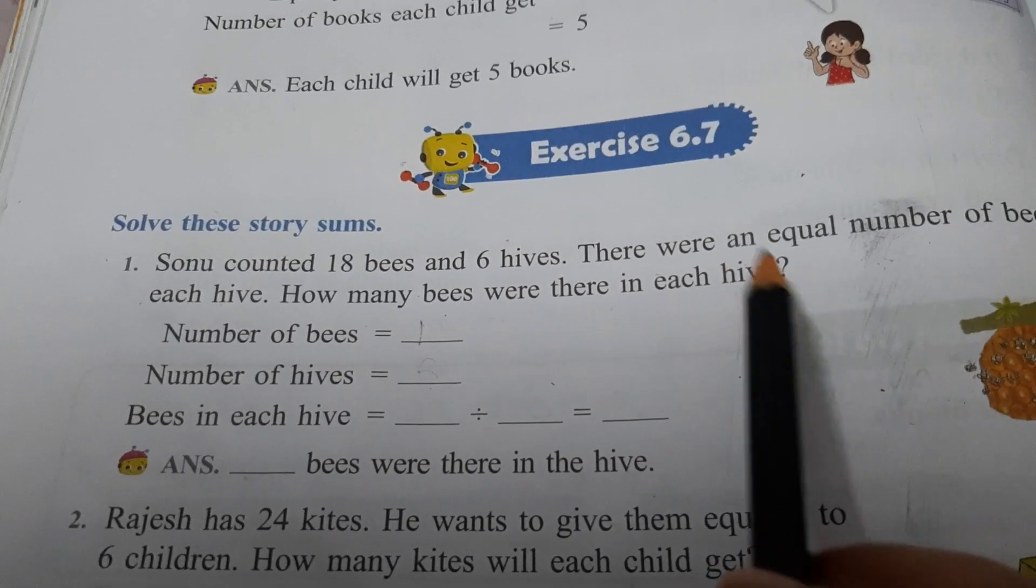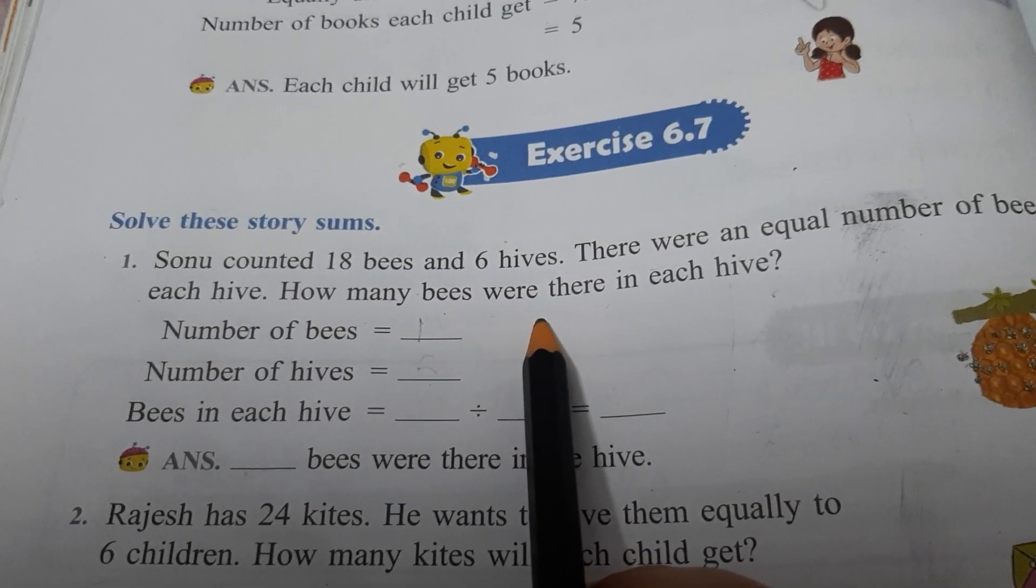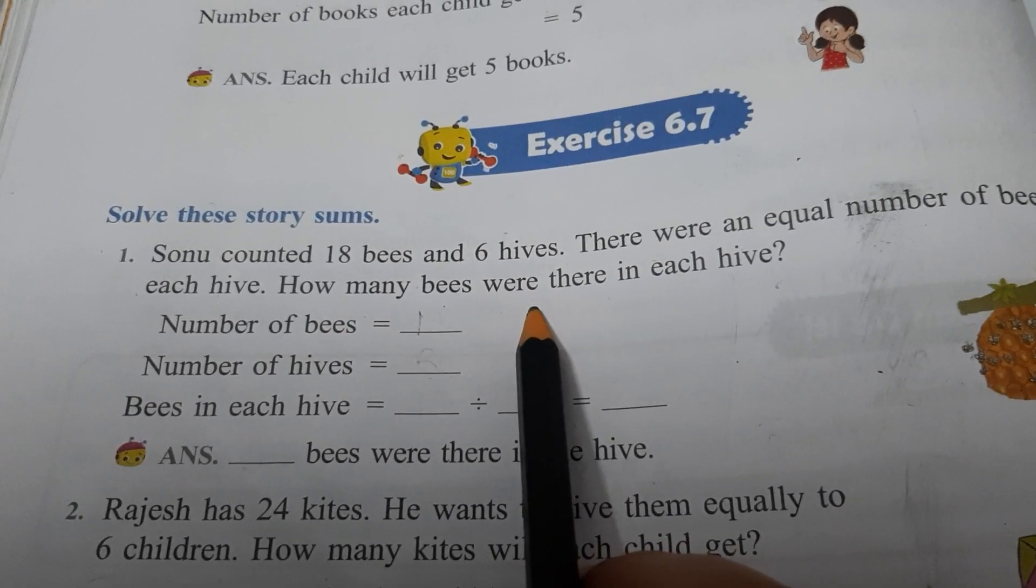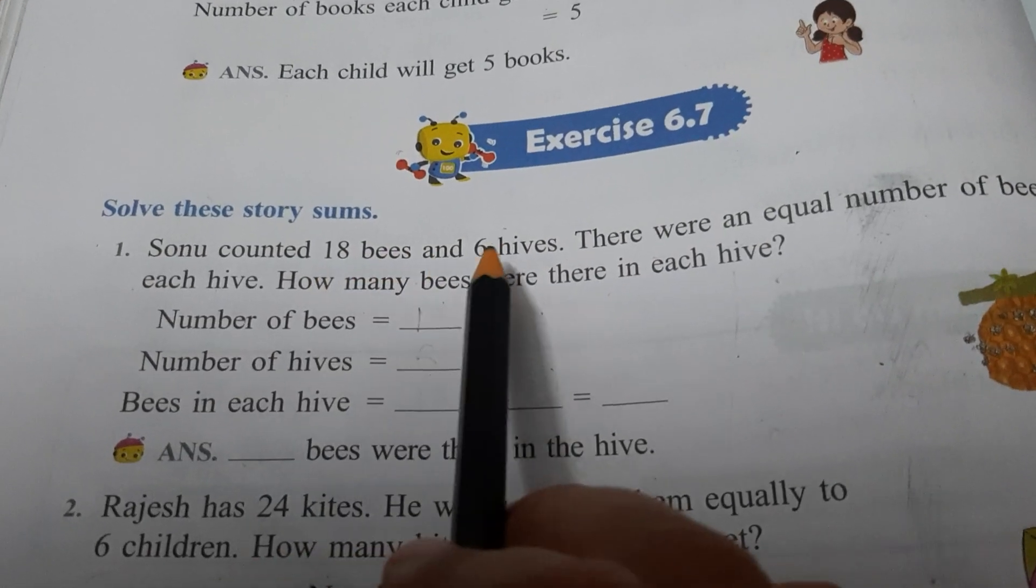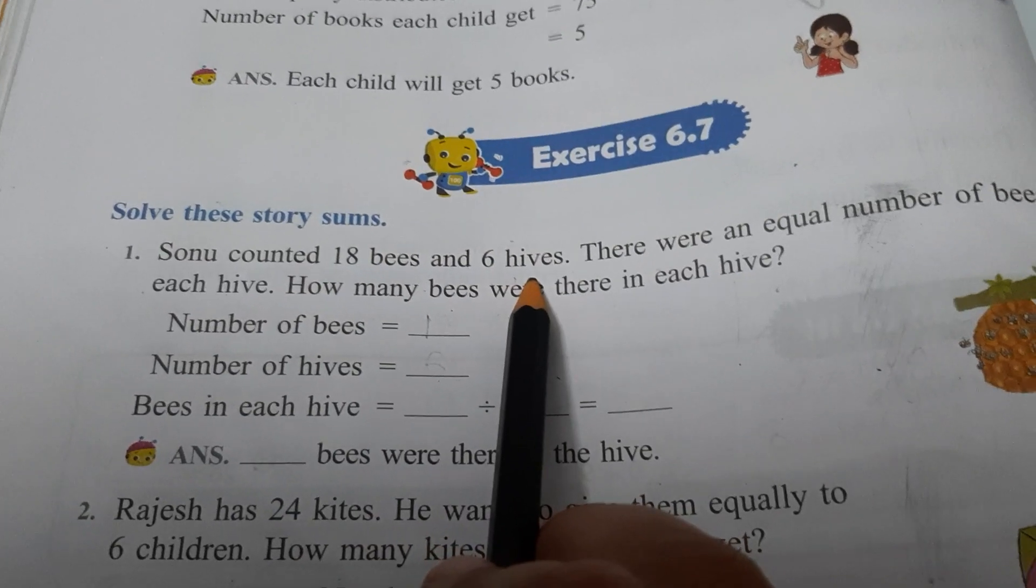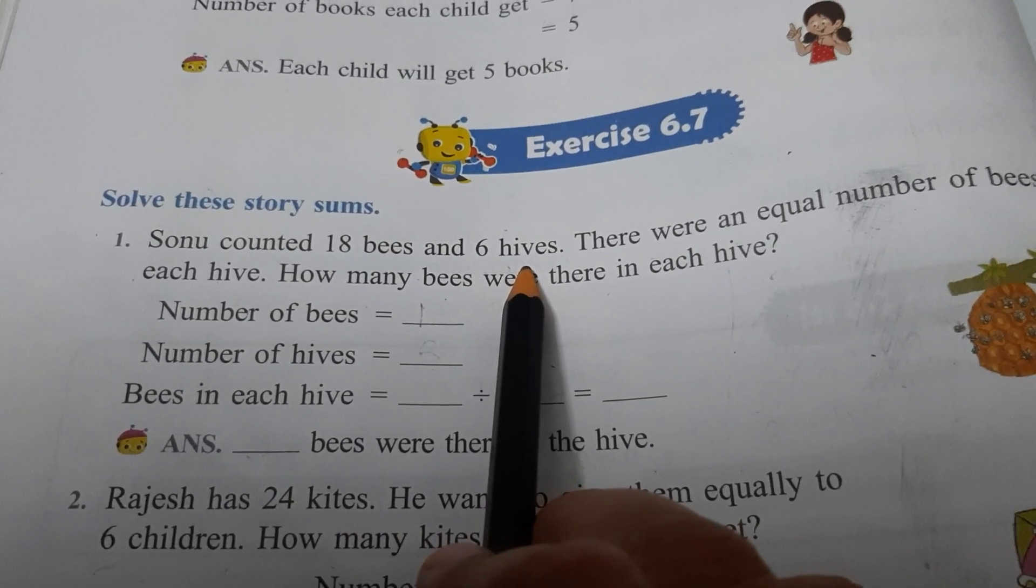So first in story sums, first we will see which values are given to us. First step is to see which values are given to us. You can see two values, two numbers. It means these things are given to us. First we will write that.